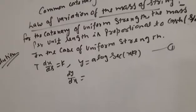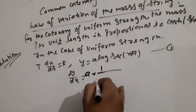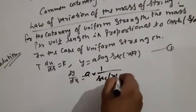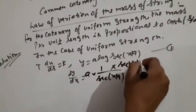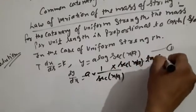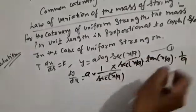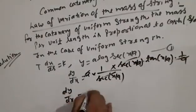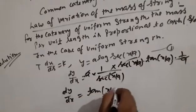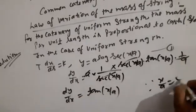Taking dy/dx of y = a·log(sec(x/a)): differentiating, the a's cancel, giving dy/dx = tan(x/a).